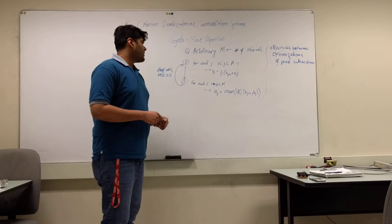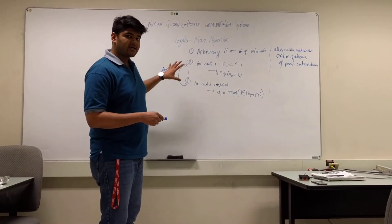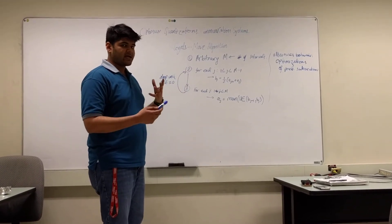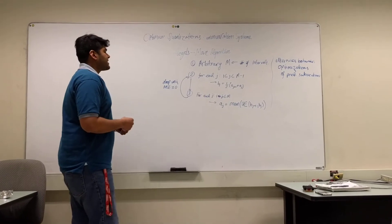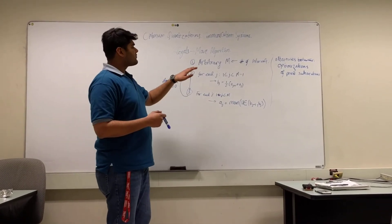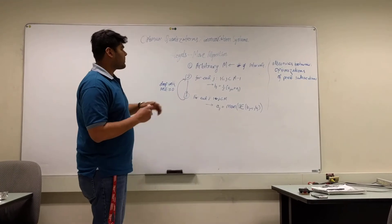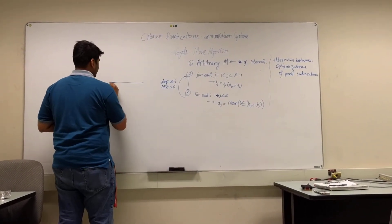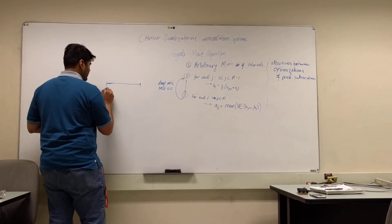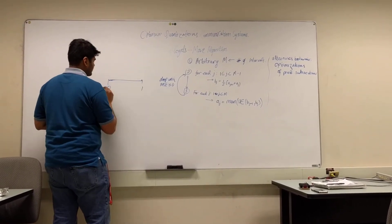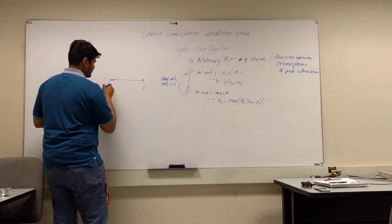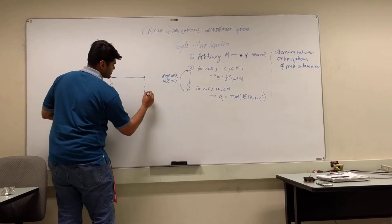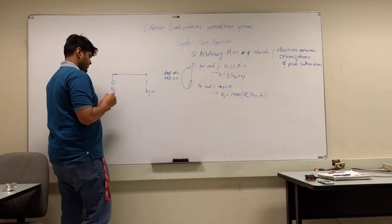The second step is where the iterative aspect of the algorithm kicks in. For each iteration, you're first looking at the boundary of the interval. So for instance, this is your interval. You have bj to be the first, and bj plus 1 to be the edge of your interval.